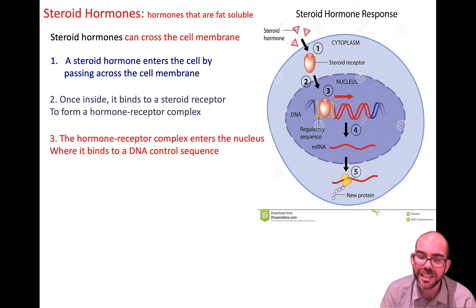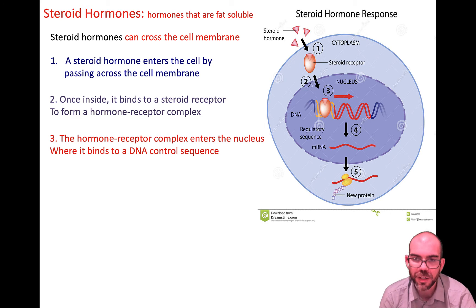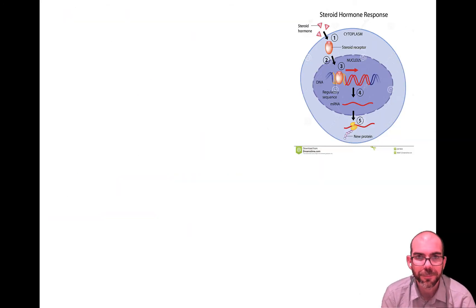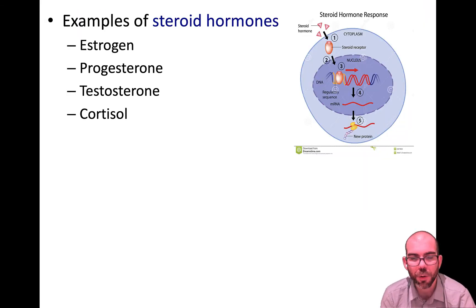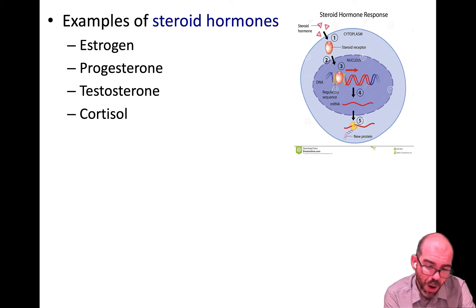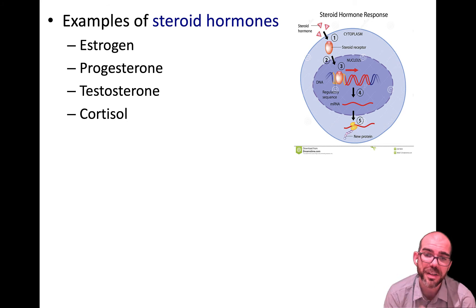Let's say in this example the response is to make a new protein. So at the end of transduction, those proteins will then go and bind to DNA where it'll be transcribed into RNA and translated into a protein. Some examples of steroid hormones include estrogen, progesterone, testosterone, and cortisol. These are very powerful hormones — estrogen, progesterone, and testosterone are sex hormones that can change almost every part of your body, and cortisol is a hormone that's released when you experience stress. They're so powerful because they can go directly across the cell membrane.